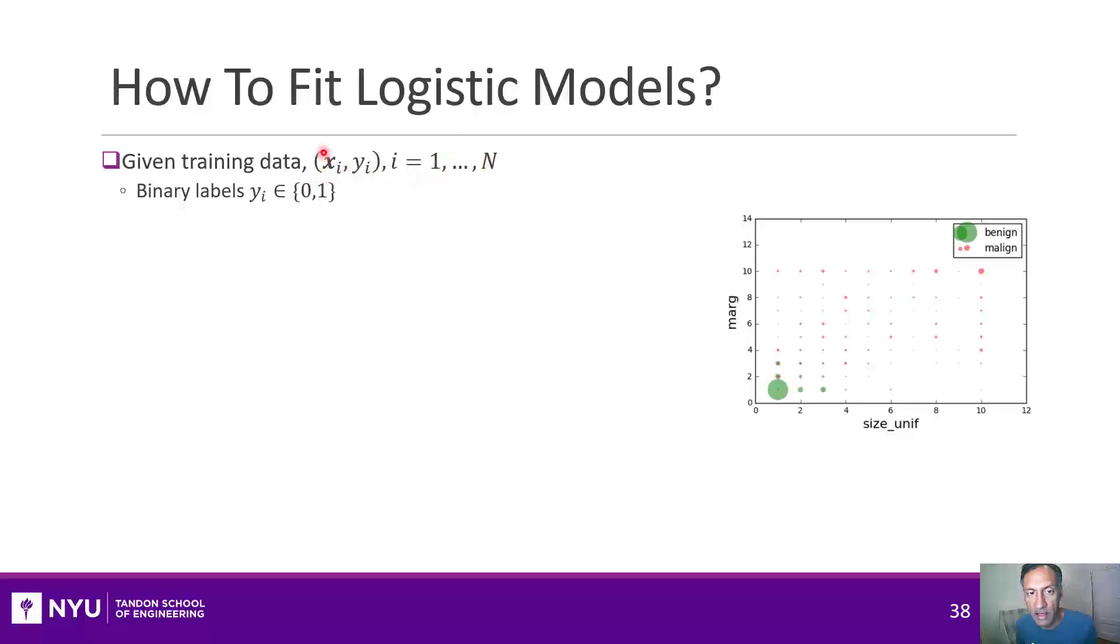So we have n data samples, each has a feature vector xi and a binary label. For example, in the breast cancer case, that feature vector would have two features, the size and the margin, and each sample would have some label. In this case, I've drawn it with a red or a green dot.